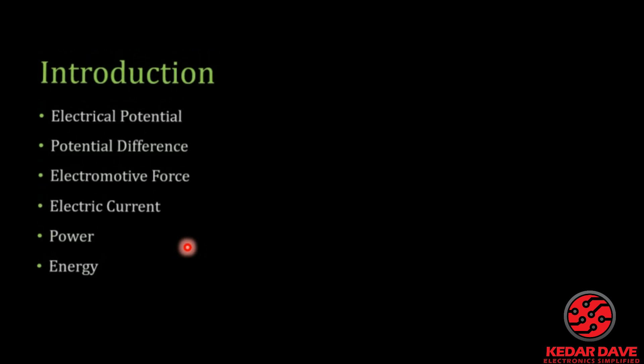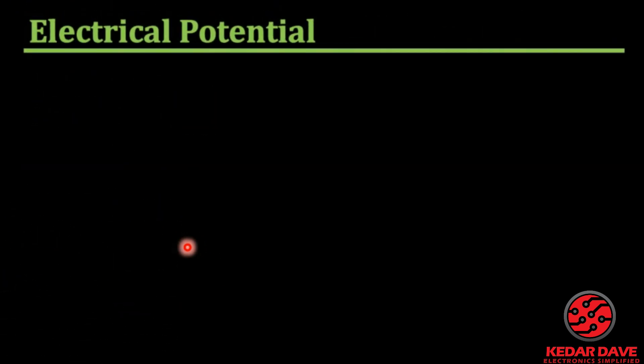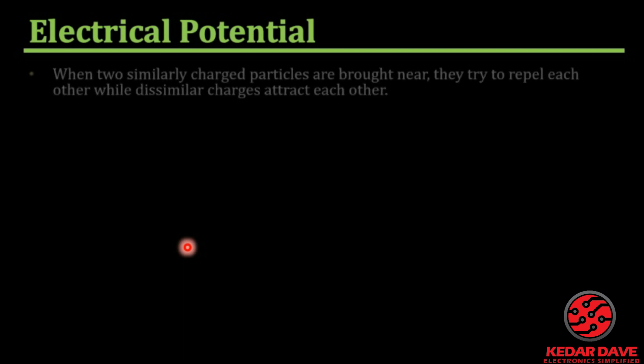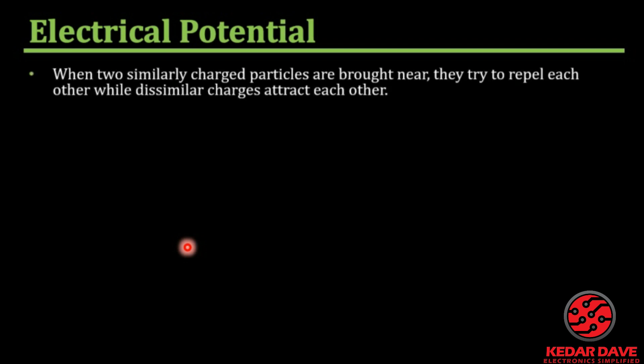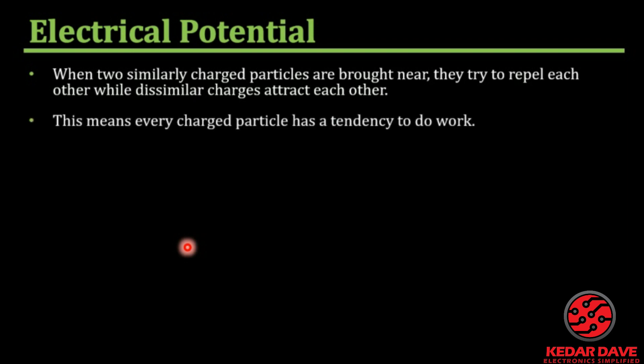The first term we are going to learn about is electrical potential. Electrical potential is defined based on the fact that two similarly charged particles, when brought near each other, repel each other, while dissimilar charges attract each other. That is our electrical potential.